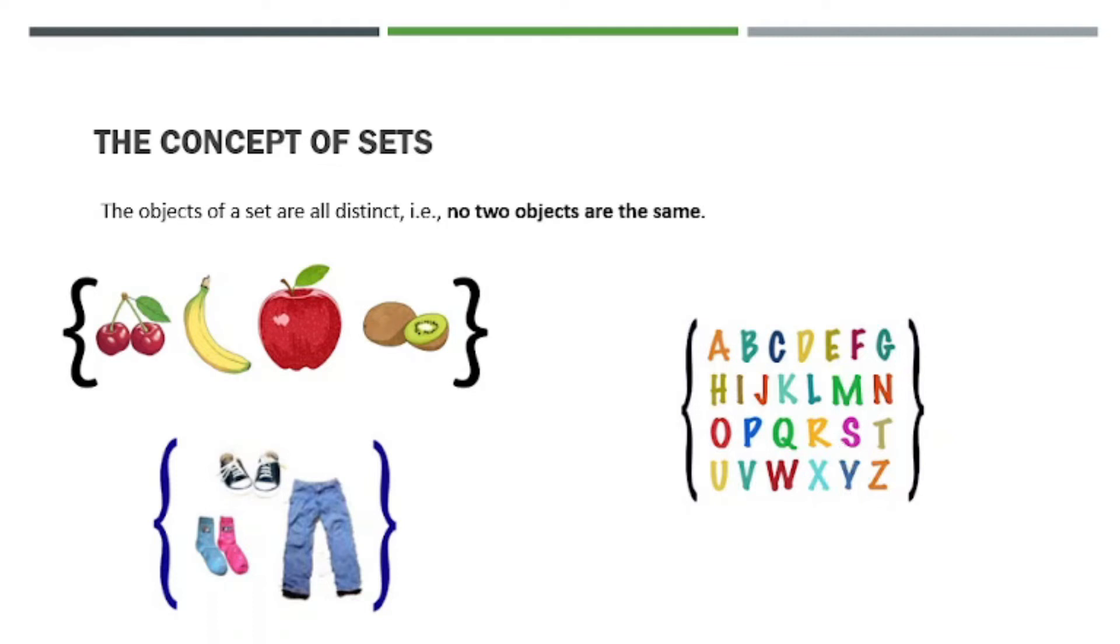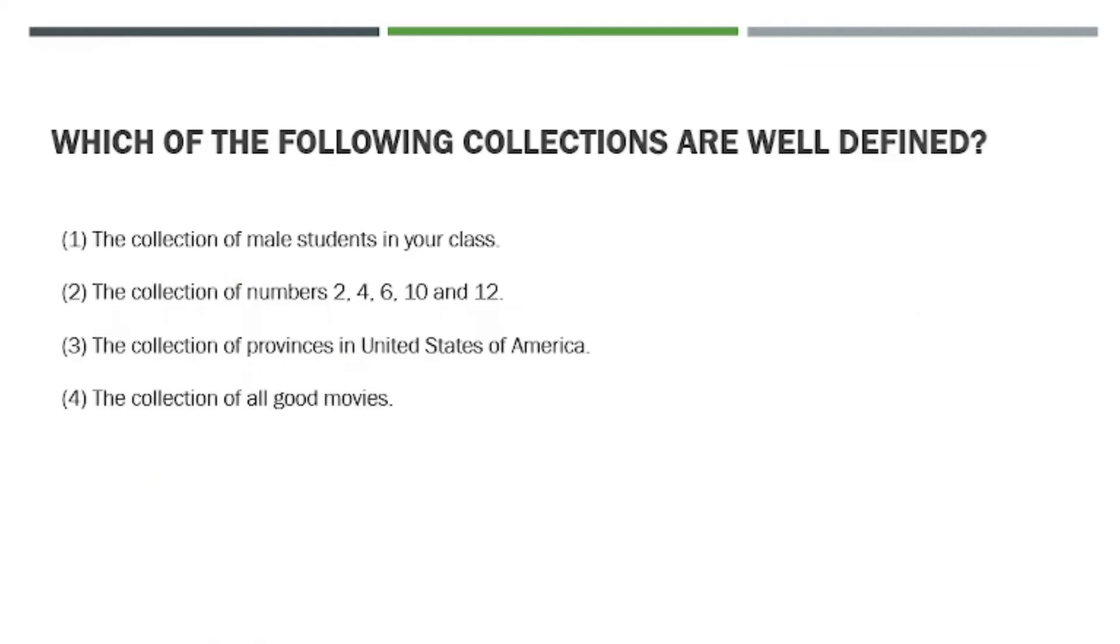That is one concept of sets. Let's move to this example: which of the following collections are well-defined? First, the collection of male students in class. Second, the collection of numbers 2, 4, 6, 10, and 12. Third, the collection of provinces in the United States of America. And fourth, the collection of all good movies.